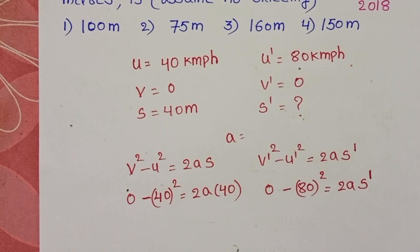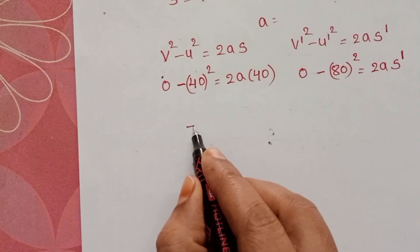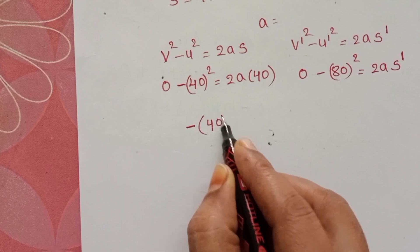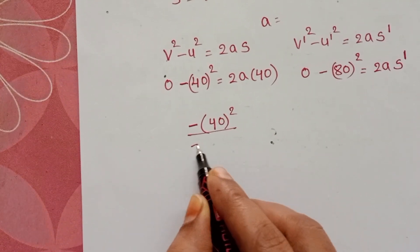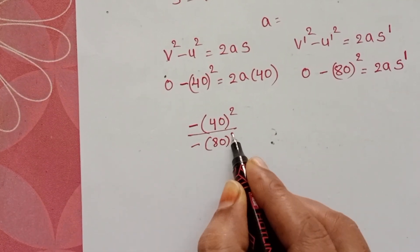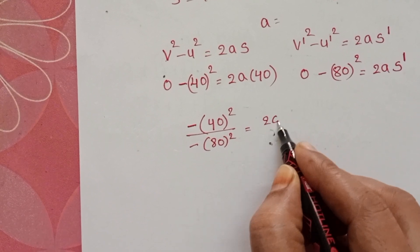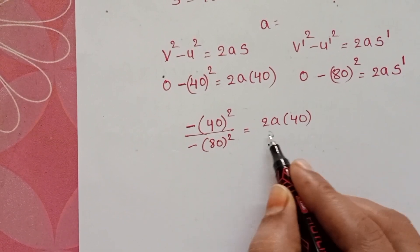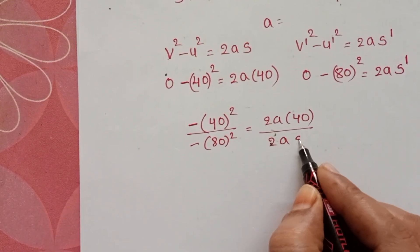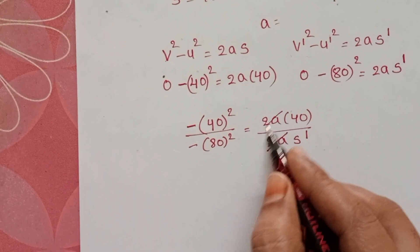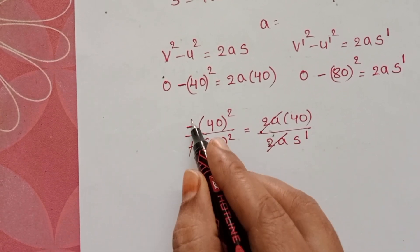Take equation 1 divided by equation 2. (-40)² / (-80)² = (2a × 40) / (2a × s'). Here, 2a gets cancelled and the minus signs also cancel.